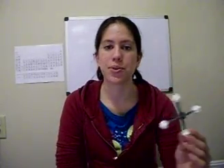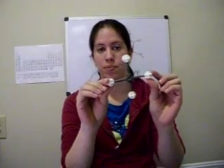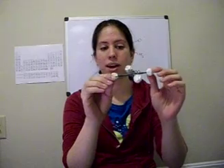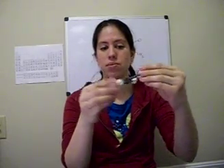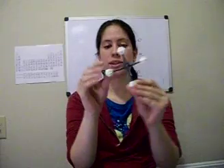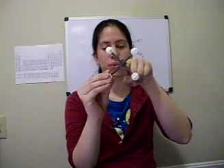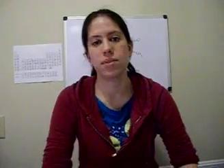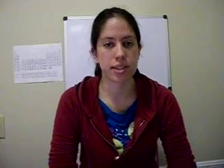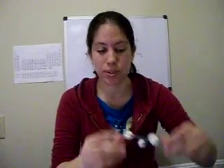Our second molecule is planar methane. Let's identify the principal axis of rotation. We have two C2s, and we have one C4 right through here. Since the C4 has the biggest number, 4, it's the principal axis.